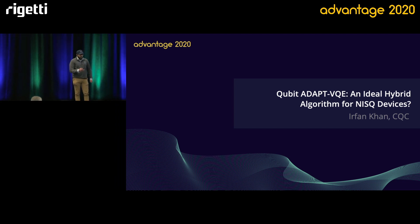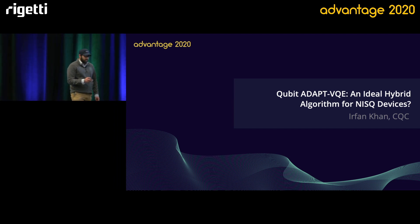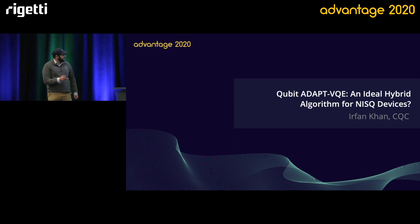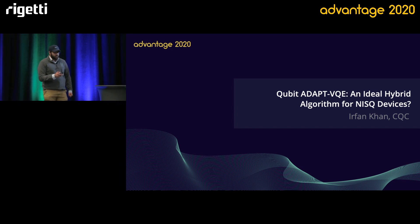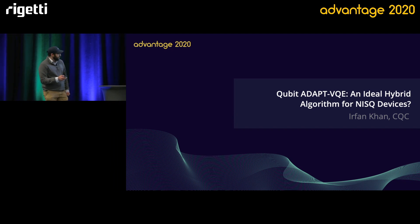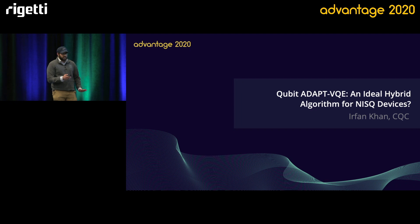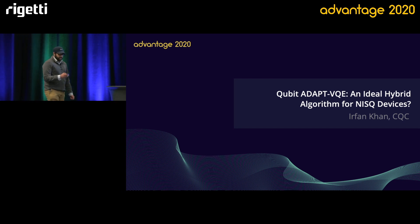Good afternoon everyone. I'm Erfan Khan, from Cambridge Quantum Computing, part of the chemistry team. I'm going to be presenting the first experimental realization of AdaptVQE on Rigetti's quantum computer. AdaptVQE wasn't developed at CQC — it was developed at Virginia Tech — but they didn't have the functionality to take it onto a machine. We did, and that's what we're presenting today.